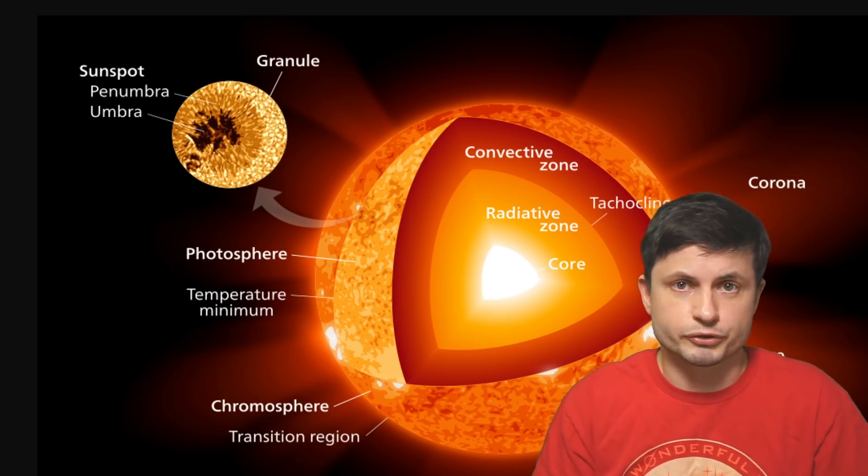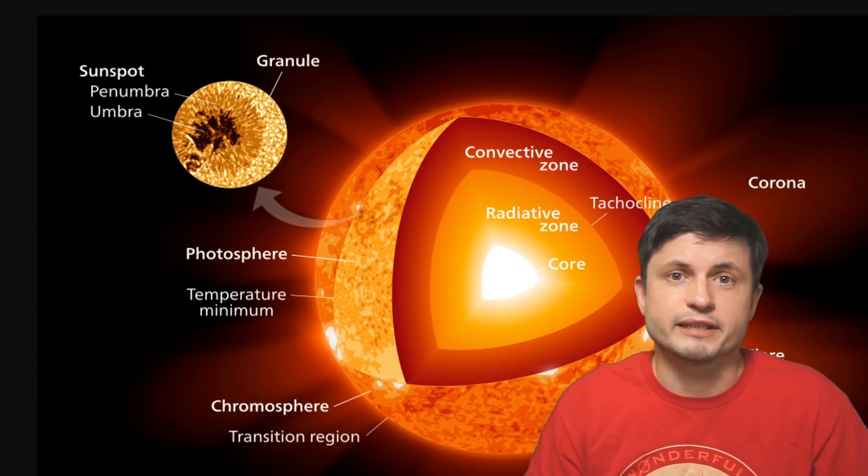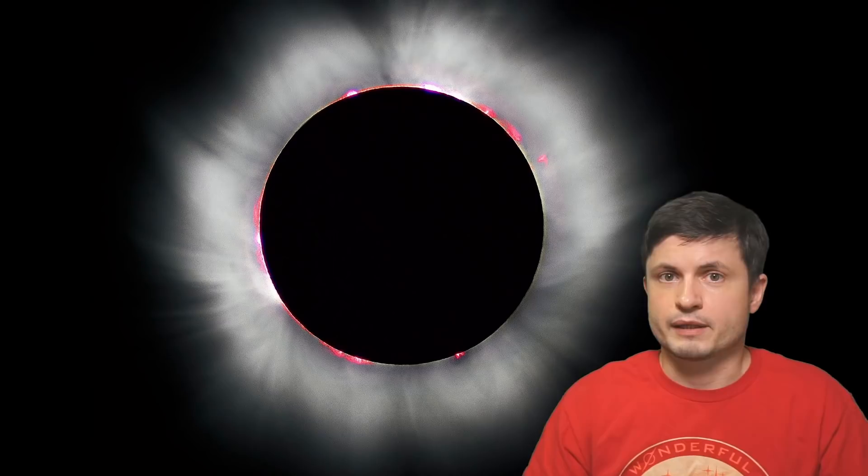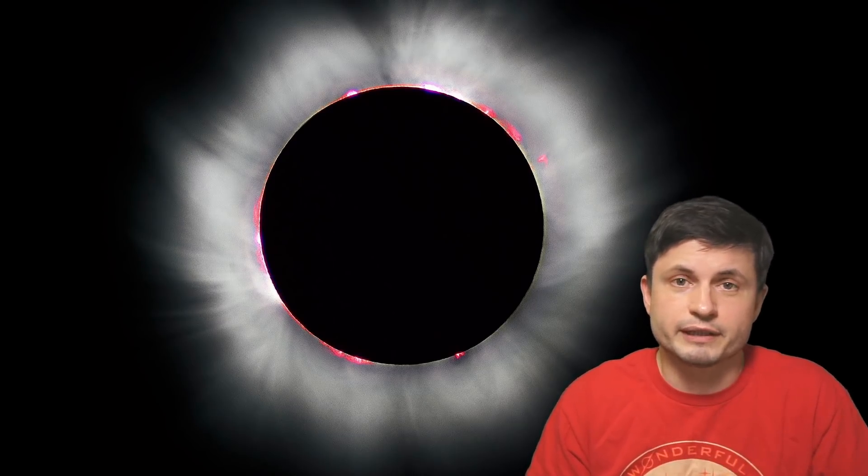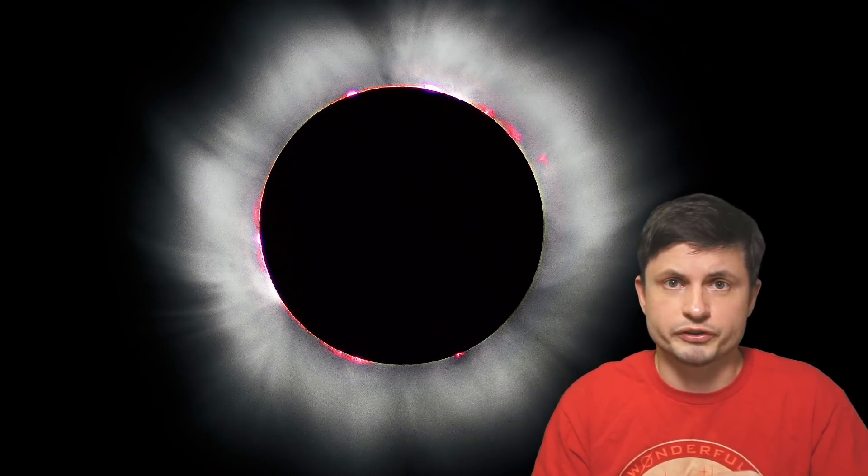It's this corona that the Parker Solar Probe recently got to touch, or essentially pass directly through it. This makes it a really important and somewhat groundbreaking achievement because in essence it is like touching the Sun. Because the Sun doesn't really have a true surface.